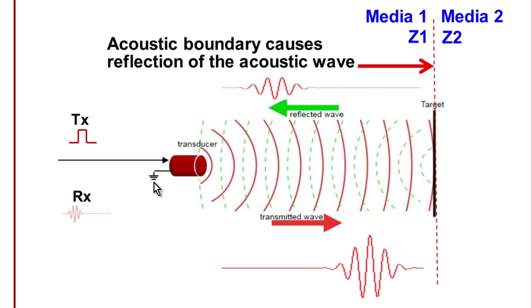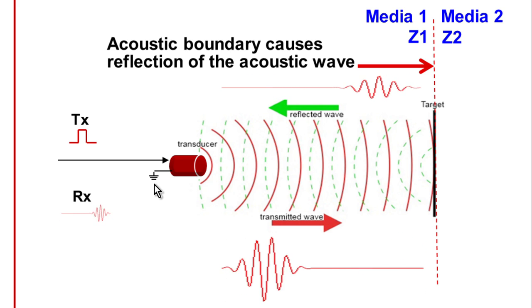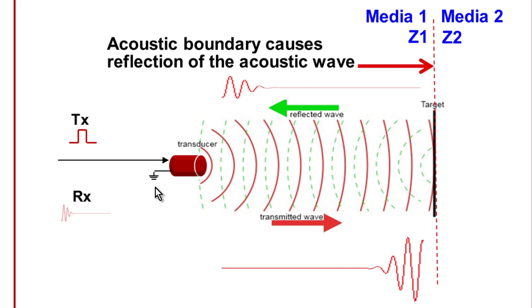The transducer then detects that echo and turns it back into an electrical signal. The TDC1000 will then detect that signal and turn it into a pulse that a microprocessor can detect.